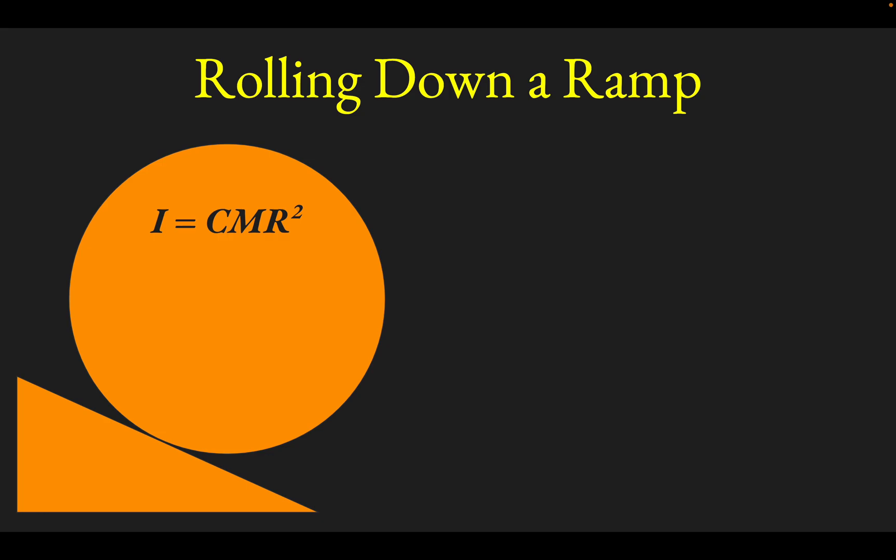Alright, let's take a look at rolling a round object down a ramp. We'll pick a generalized round object where the moment of inertia is given by a constant times MR squared.